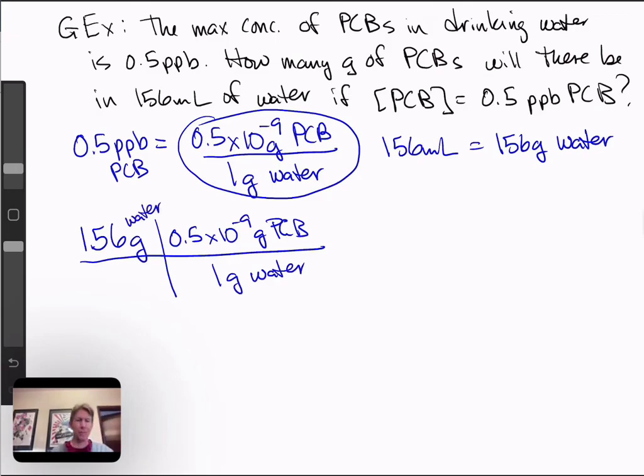My grams of water cancel out, and I just multiply 156 times 0.5 times 10 to the minus 9.